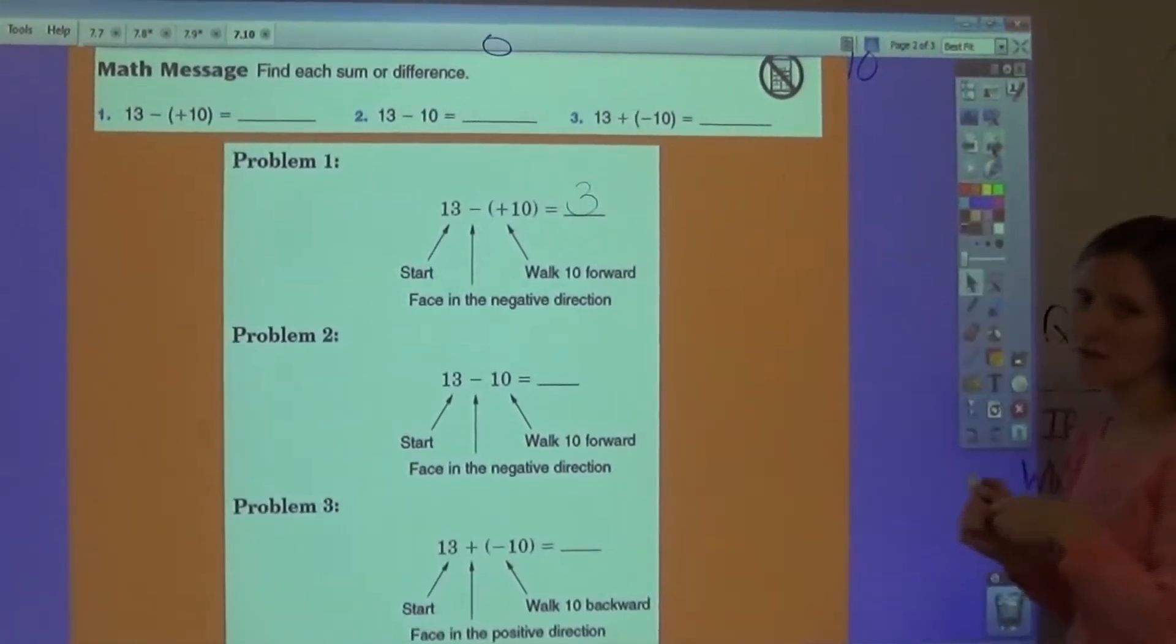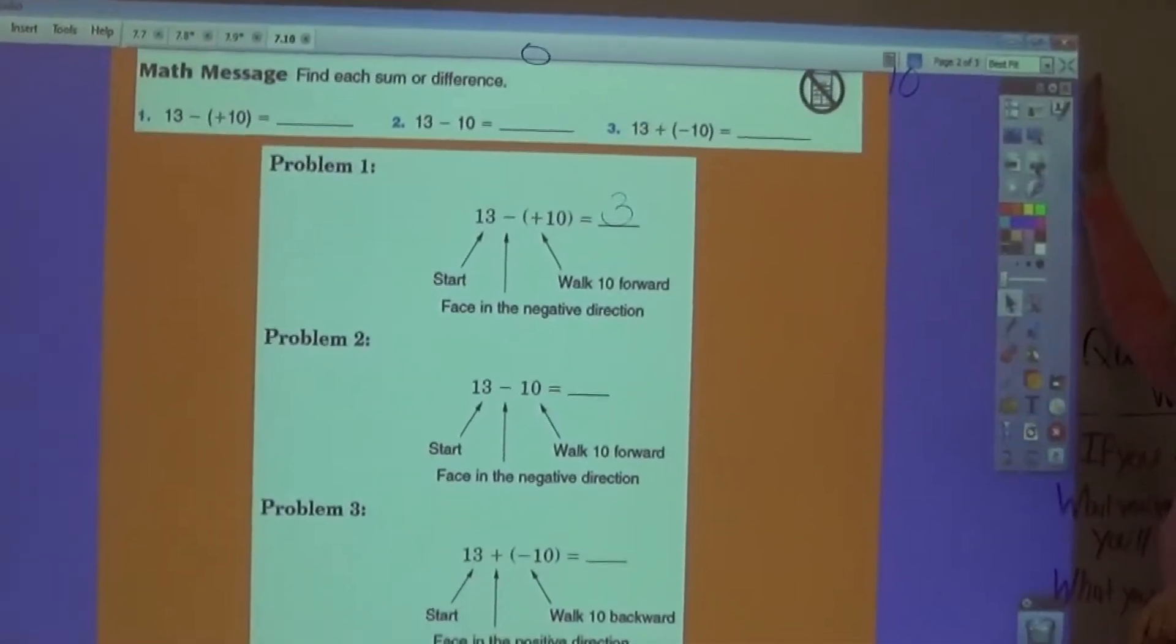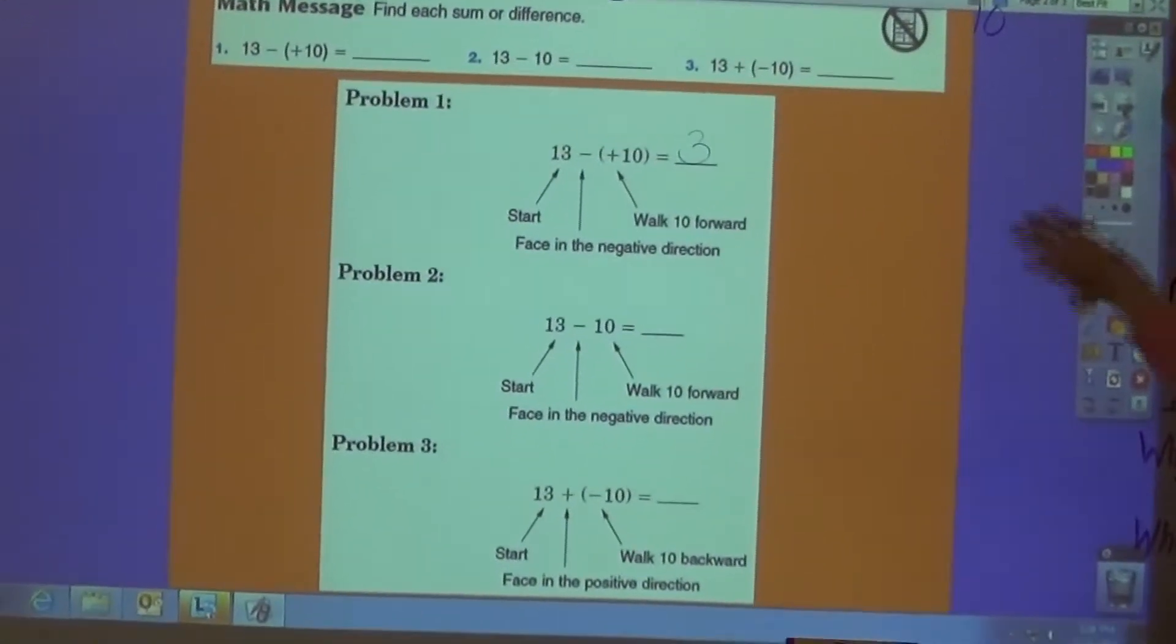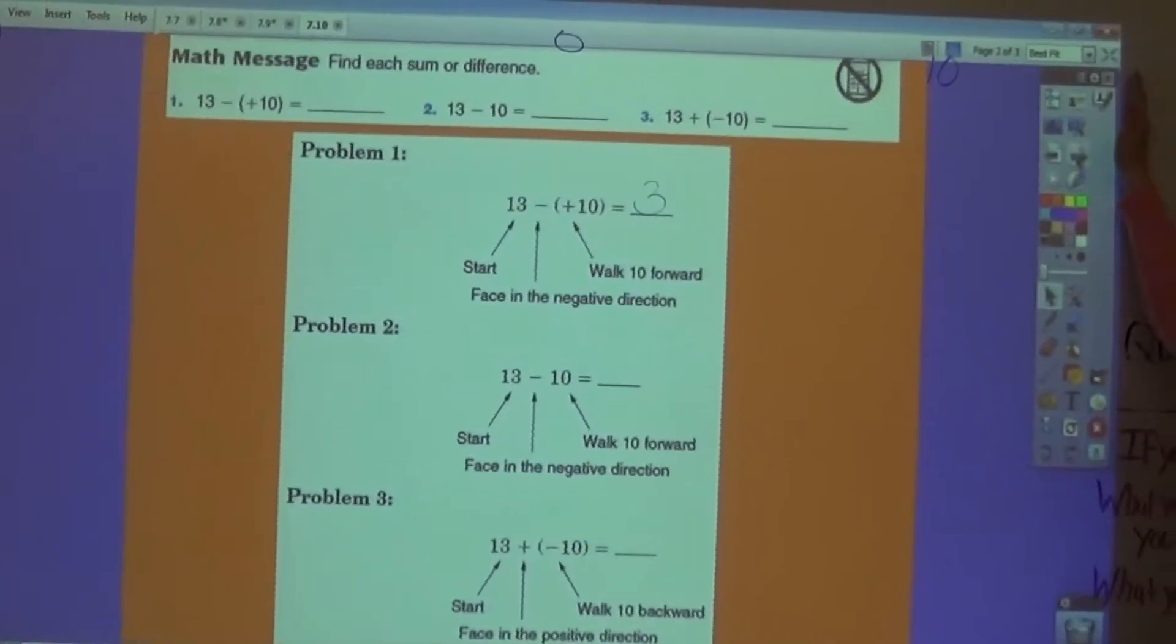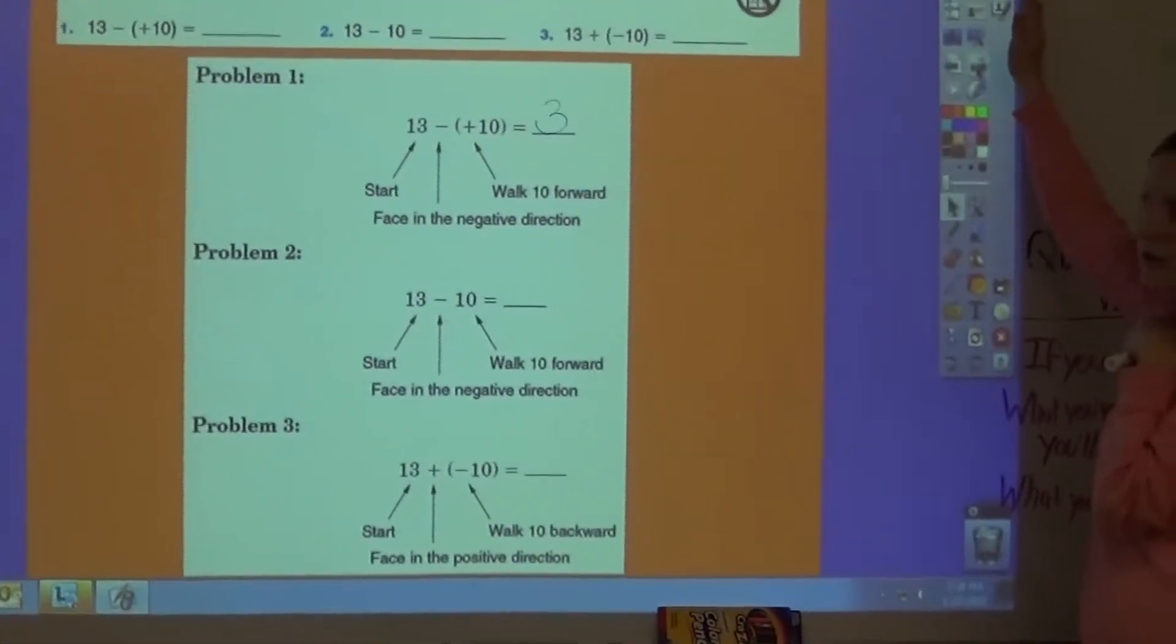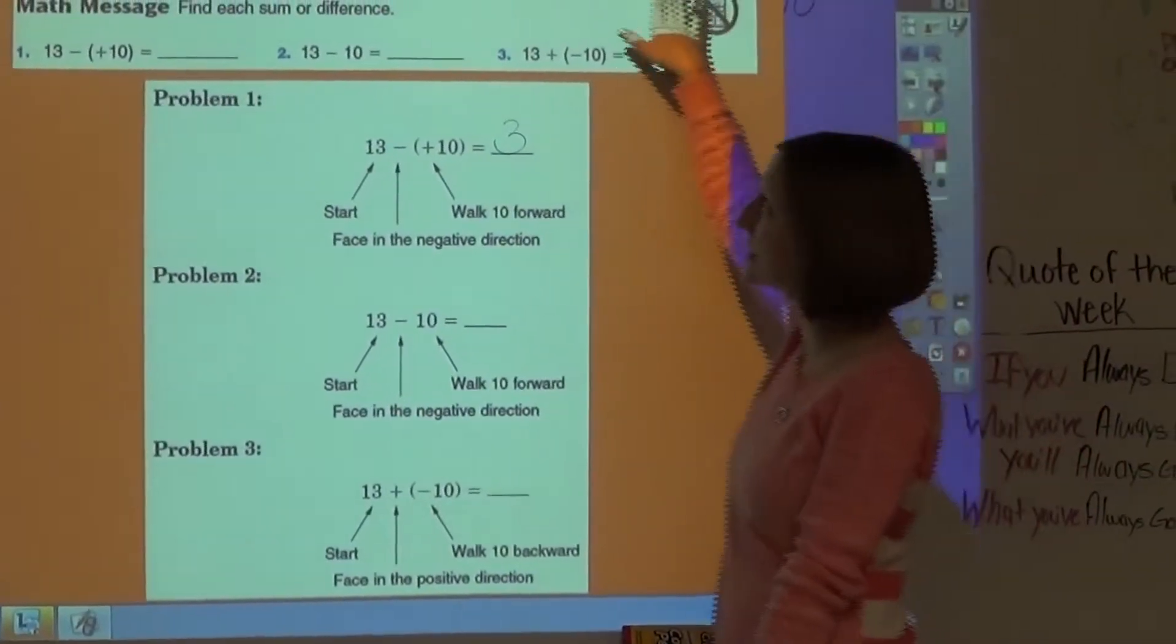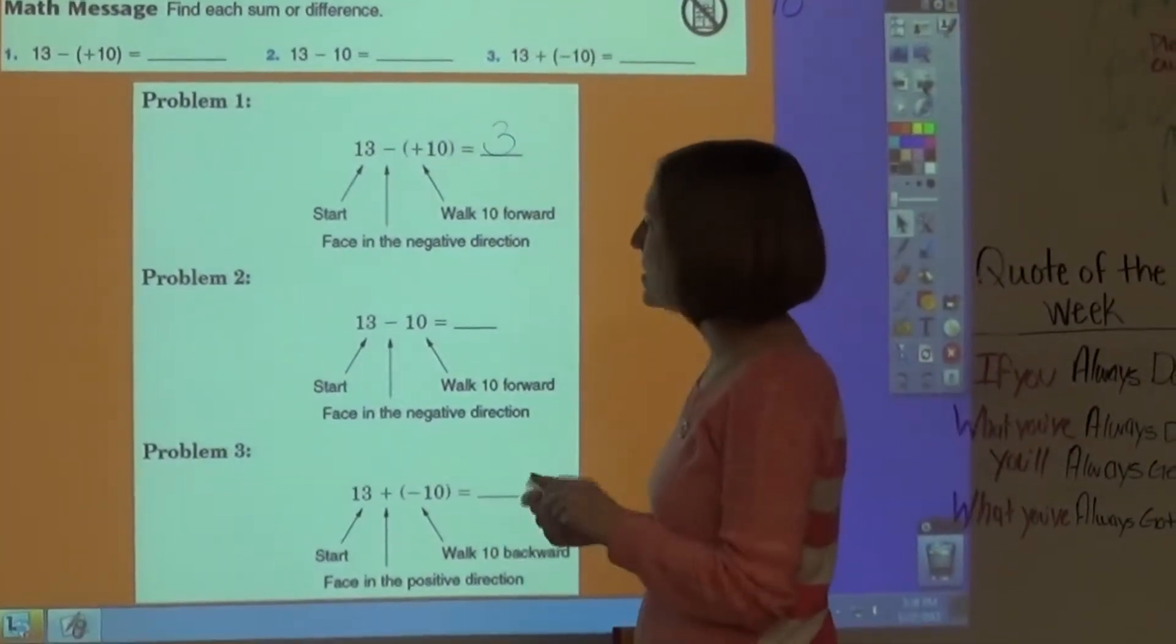Let's try it for problem number 2. I'm going to start again at 13, I'm going to face negative because we're subtracting, and I'm going to walk forward because it's a negative 10. So I'm at 13, I walk forward 10 steps, and again I would end at positive 3.